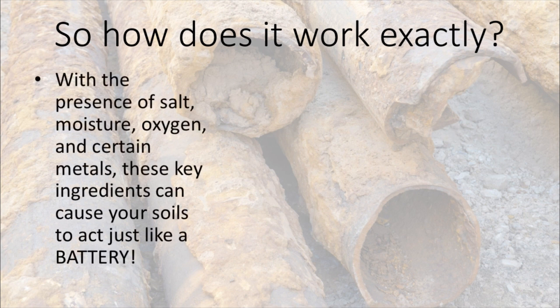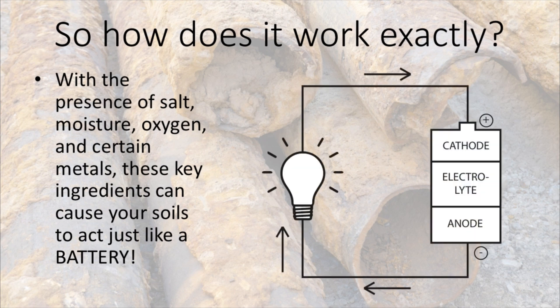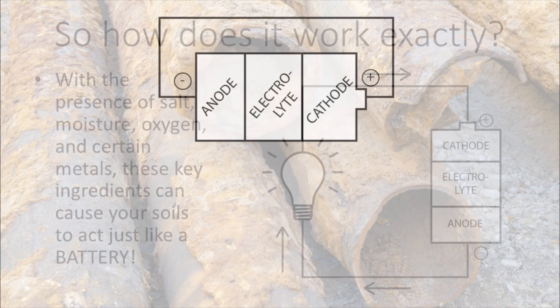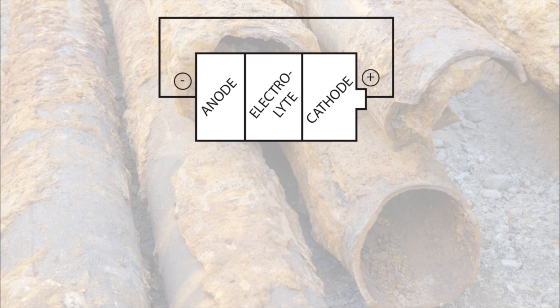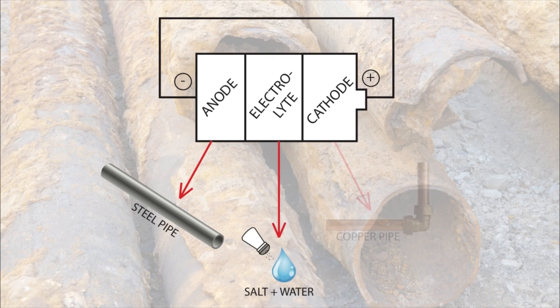How does corrosive soil work exactly? With the presence of salt, moisture, oxygen, and certain metals, these key ingredients can cause your soils to act just like a battery. As you can see in this battery diagram on the right, a typical battery has a cathode, electrolyte, and an anode. When the anode and cathode are connected through some sort of circuit, you get an electrical current. With that in mind, buried steel pipe can be the anode, water with salt solutions can be the electrolyte, and buried copper pipe can be the cathode — giving us potential for an electrical current within our soils.